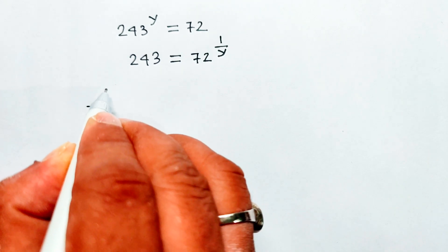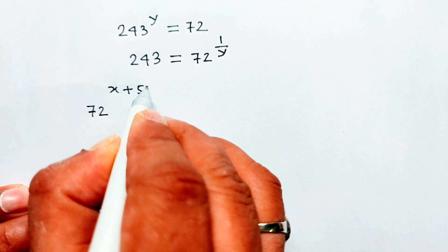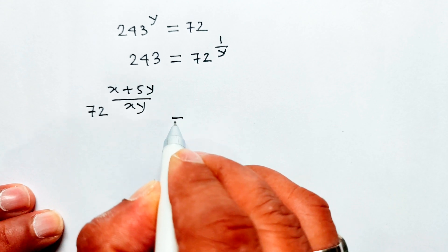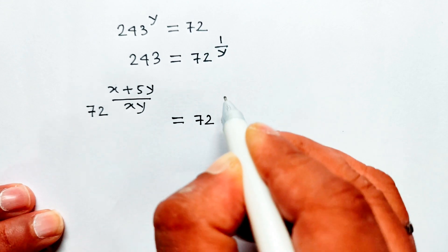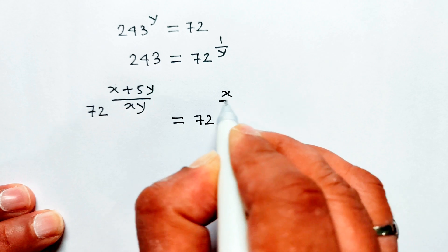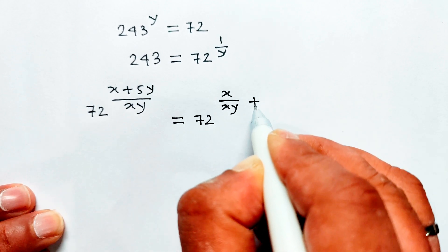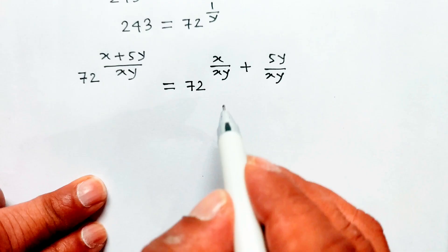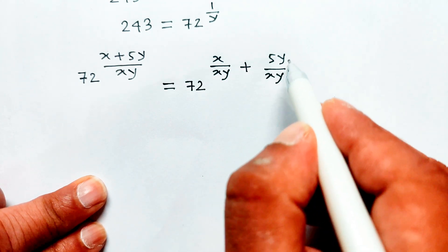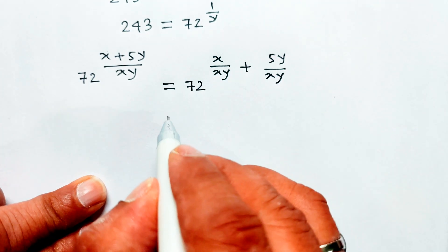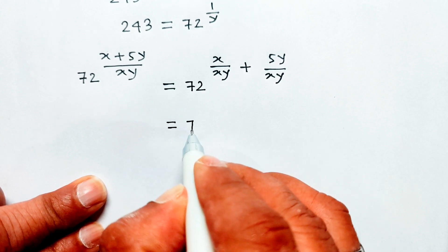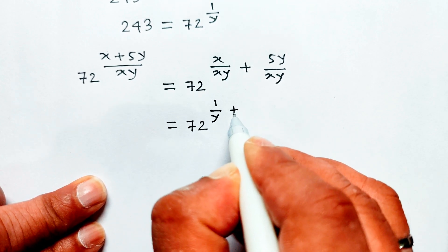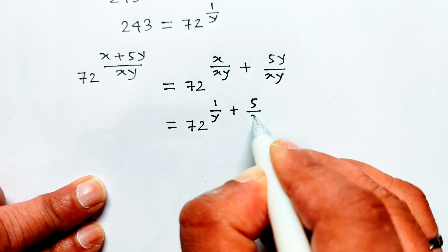Now, 72 to the power x plus 5y divided by xy, equal 72 to the power x divided by xy, then equal 72 to the power 1 divided by y plus 5 divided by x.